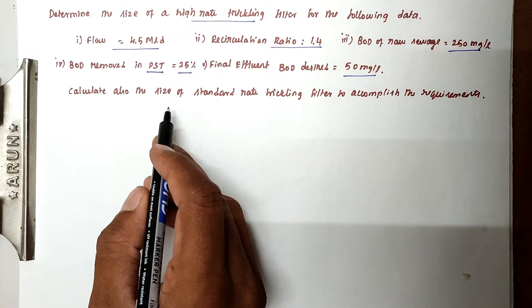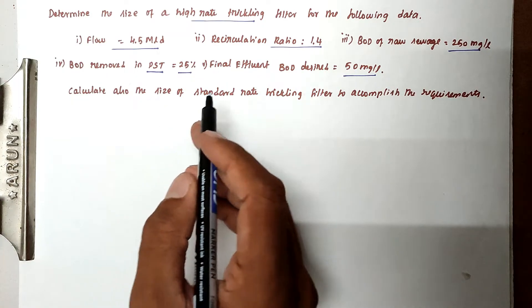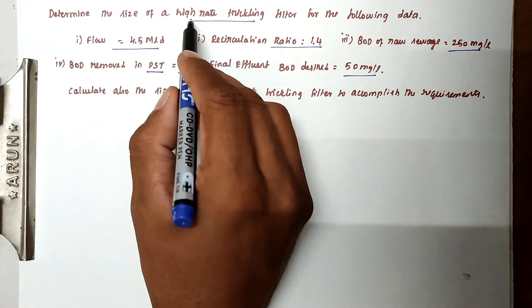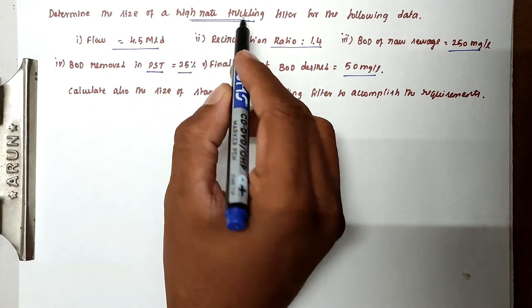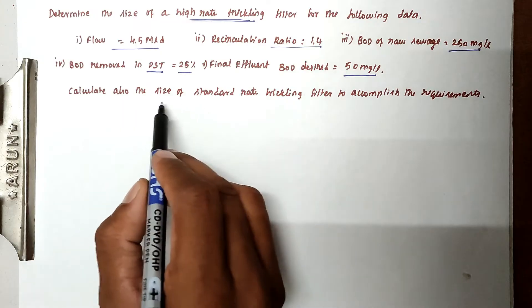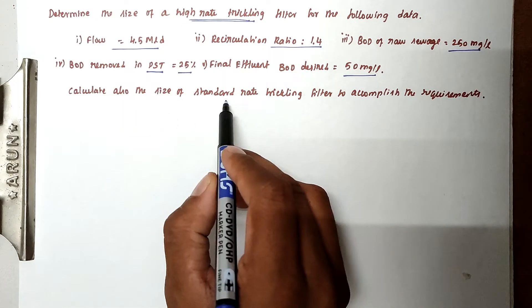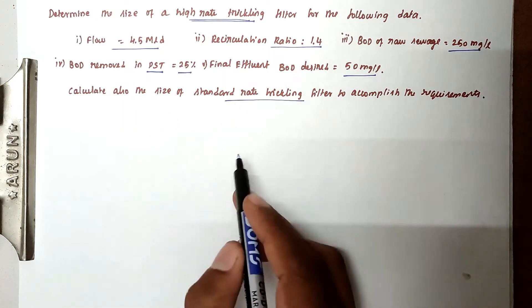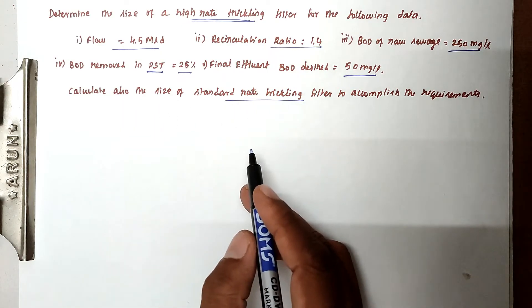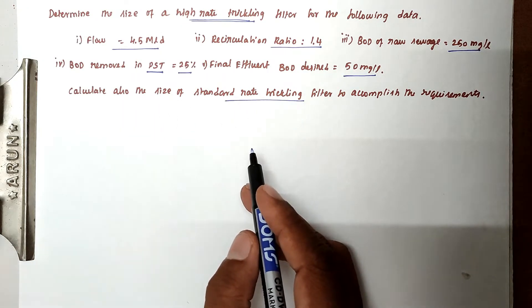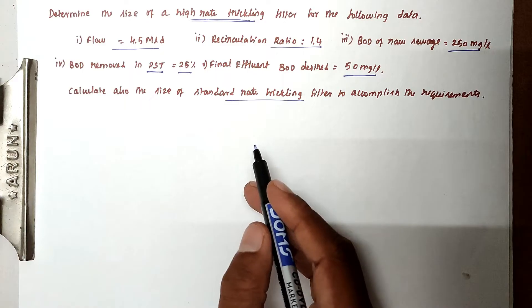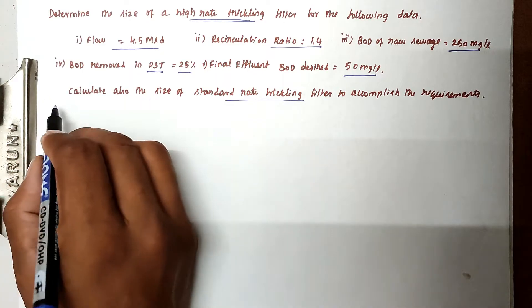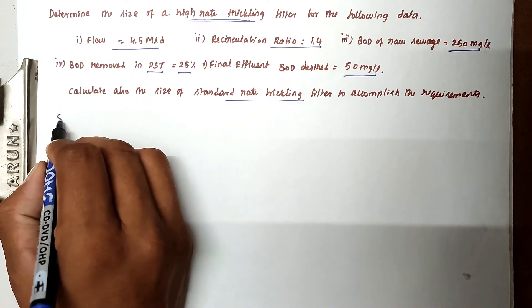We have to find the size in two types: one is high rate trickling filter and second one is standard rate trickling filter.